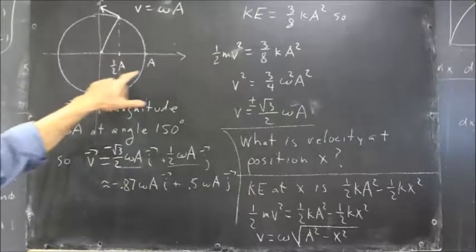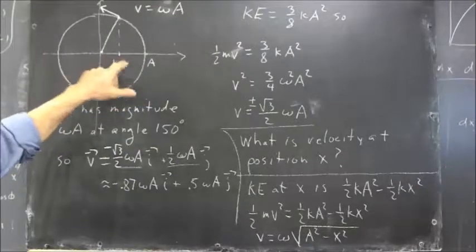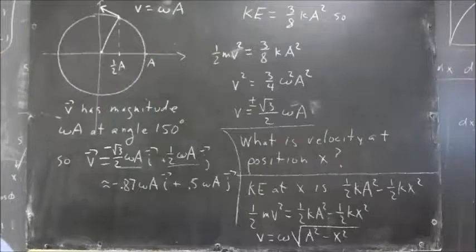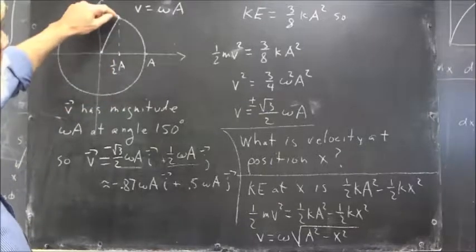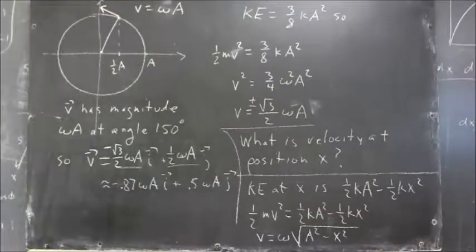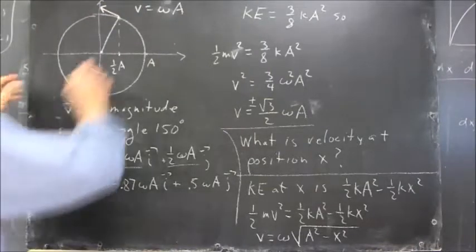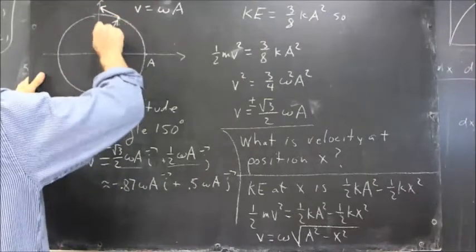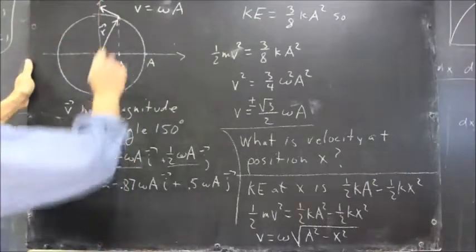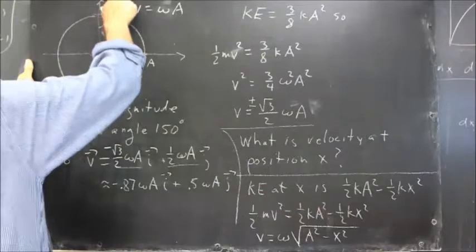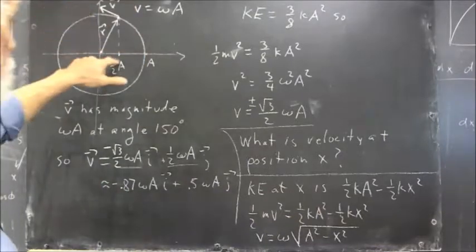So we have position one half A, the position twice as close to the origin as this one. Now at that position, we've got the R vector, but more importantly we have the velocity vector, tangent to the circle at this point.